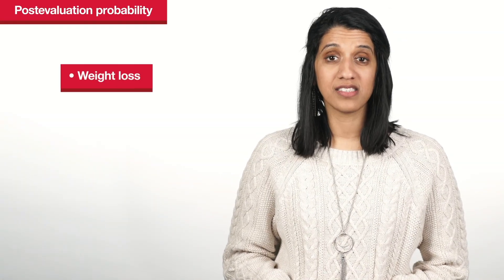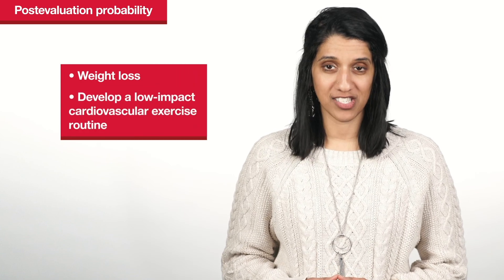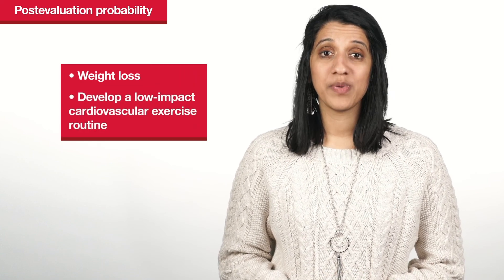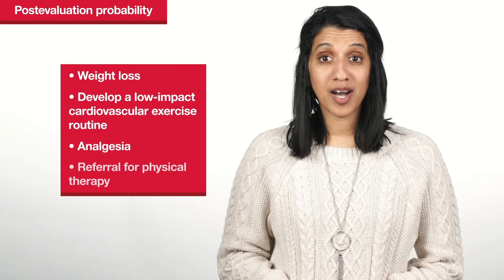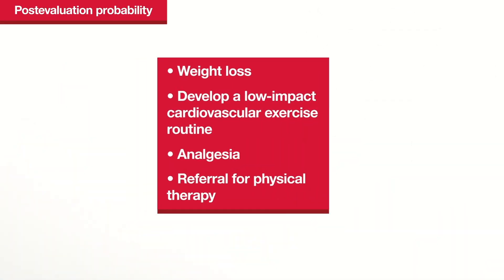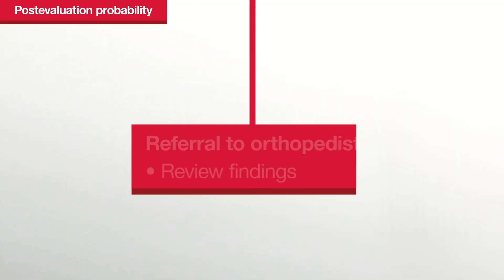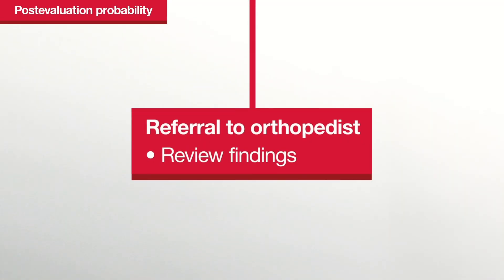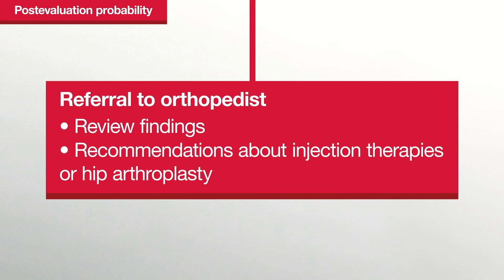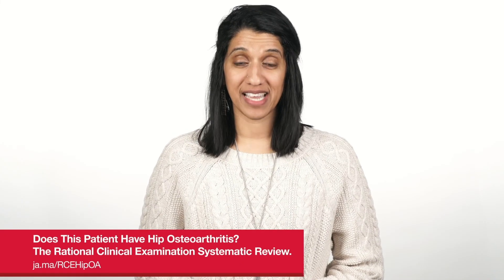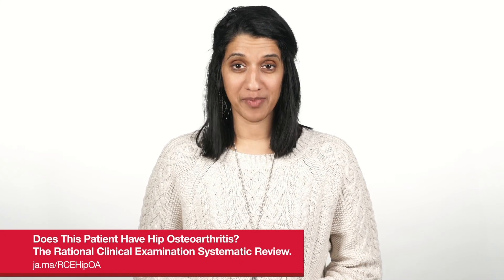This patient should be counseled to pursue weight loss, develop a low-impact cardiovascular exercise routine, be given analgesia, and possibly referred for physical therapy. If these conservative therapies fail, radiographs should be ordered, and she should be referred to an orthopedist to review the findings and make recommendations about hip injection therapies or hip arthroplasty. Read the Rational Clinical Exam published in JAMA to learn more.